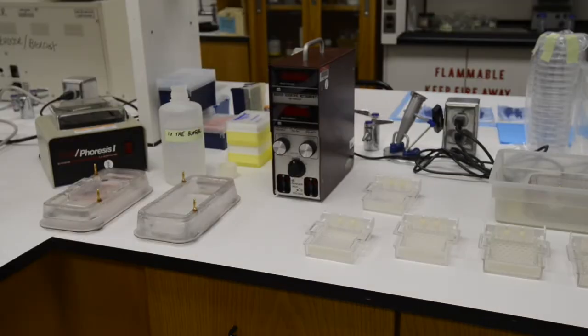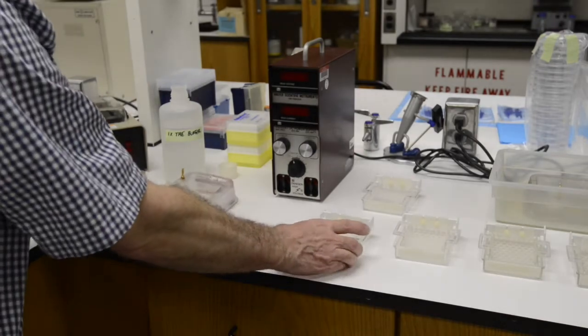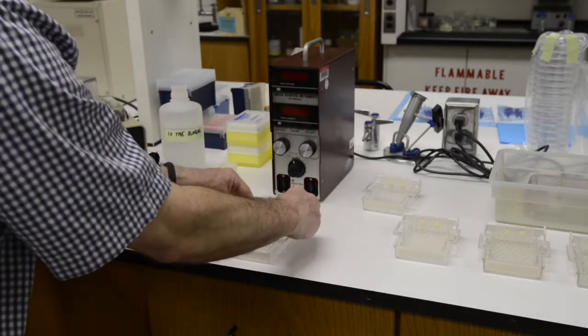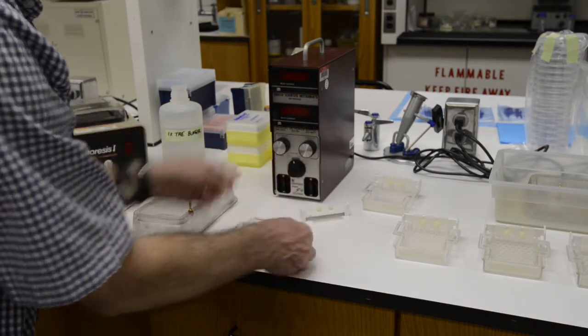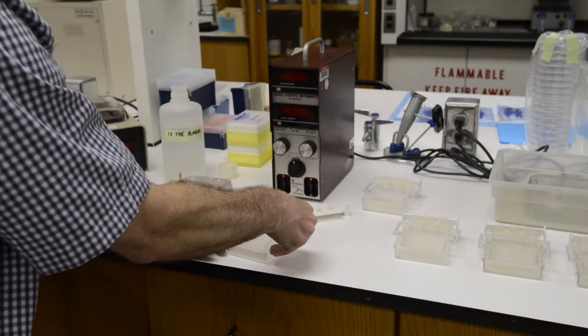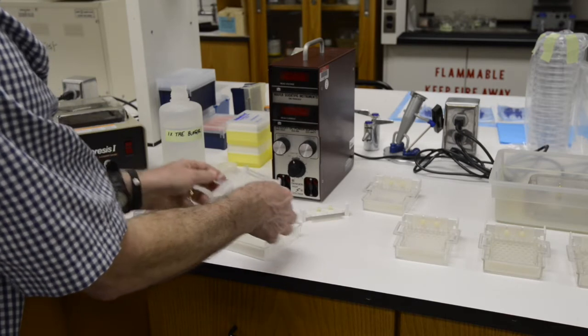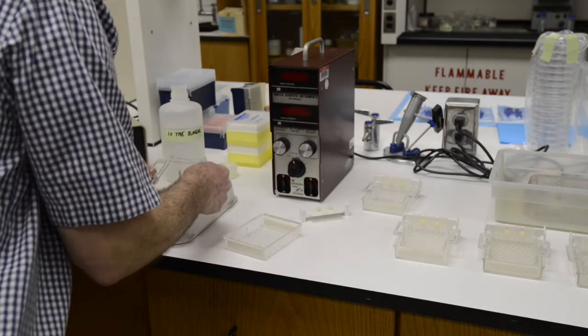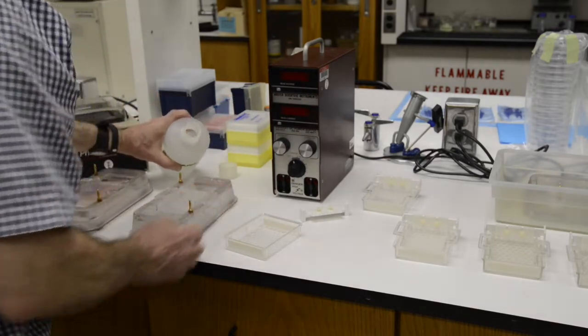Once the gel has solidified, then get your running tray. Gently pull the comb out of the gel by pulling directly upright. And then gently pull the casting tray holding the gel out of the casting unit and place it in the running unit.